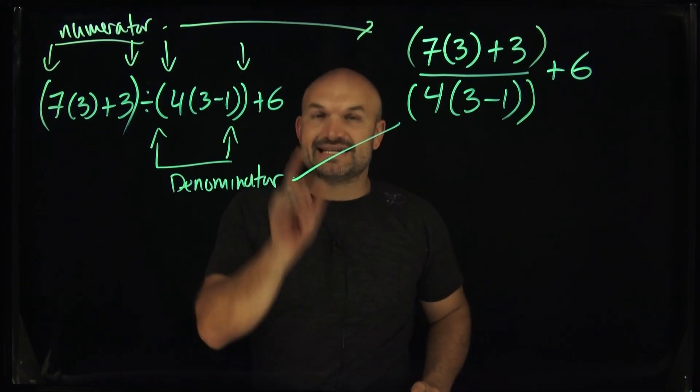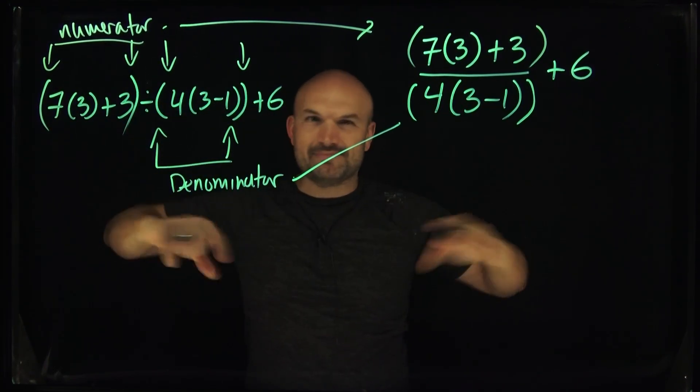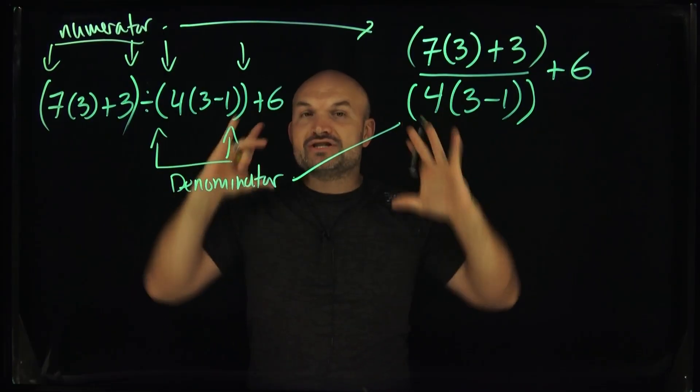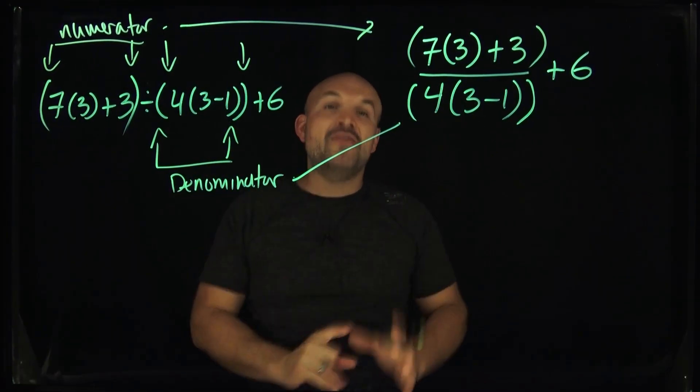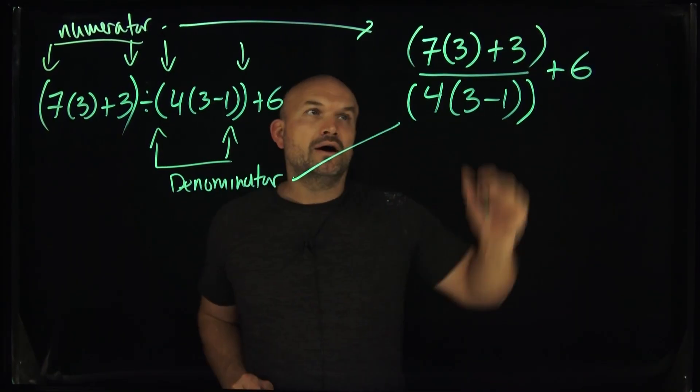So what that means is I want you to simplify your numerator first and your denominator first. You can do them at the same time that I can interact with each other, but you're simplifying them first. And then you go through and apply your exponents, your multiplication, division, and addition and subtraction. All right.